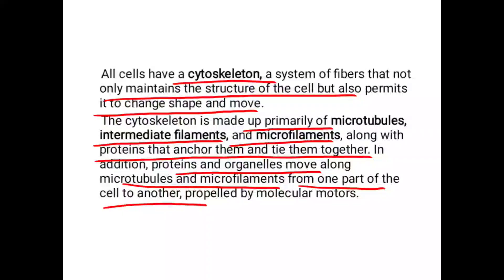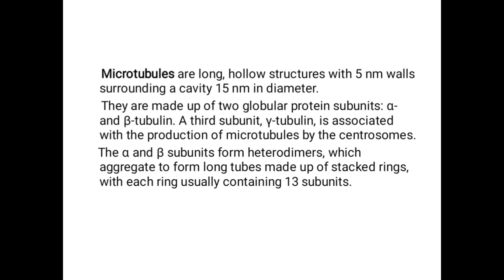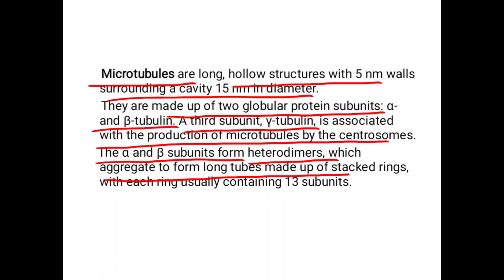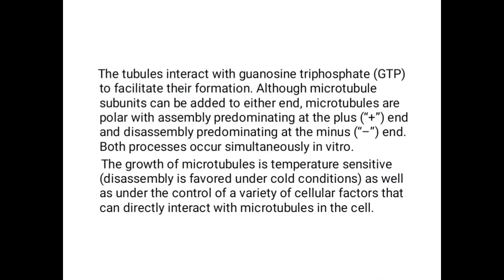Microtubules are long hollow structures with 5 nanometer walls surrounding a cavity of 50 nanometers in diameter. They are made up of two globular protein subunits, alpha and beta tubulin. A third subunit, gamma tubulin, is associated with the production of microtubules by centrosomes. The alpha and beta subunits form heterodimers which aggregate to form long tubules made up of stacked rings, with each ring usually containing 13 subunits. The tubules interact with guanosine triphosphate (GTP) to facilitate their formation.